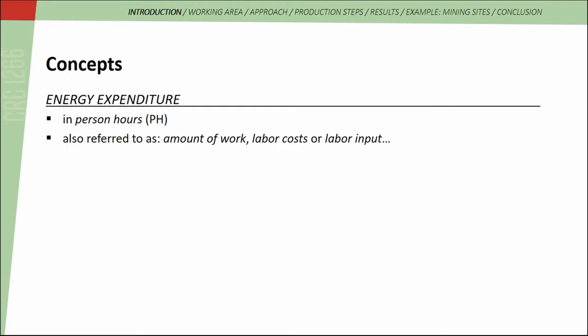First I would like to explain some basic concepts of my work. The energy expenditure characterizes the expenditure used for an activity, for example the building of a house. It is measured in person hours. One person hour corresponds to the work one person can provide in one hour, and is also referred to as expenditure of time, amount of work, effort, labor cost, or labor input.